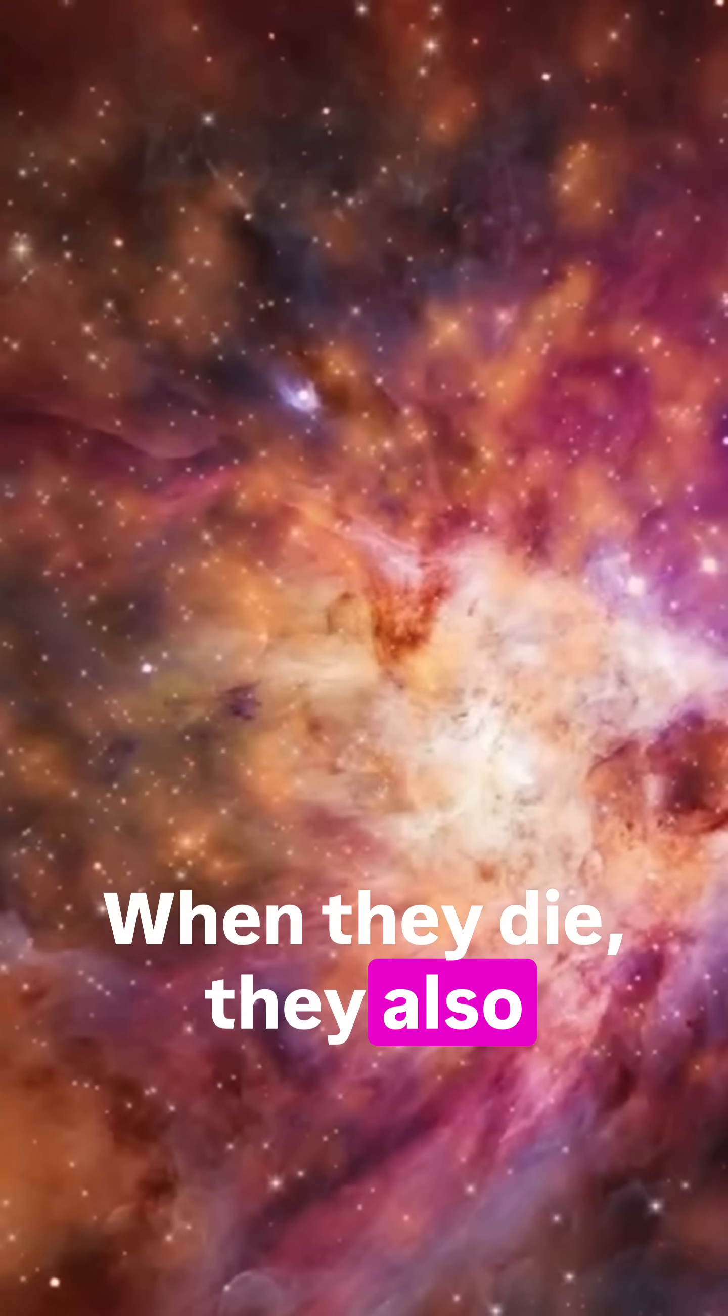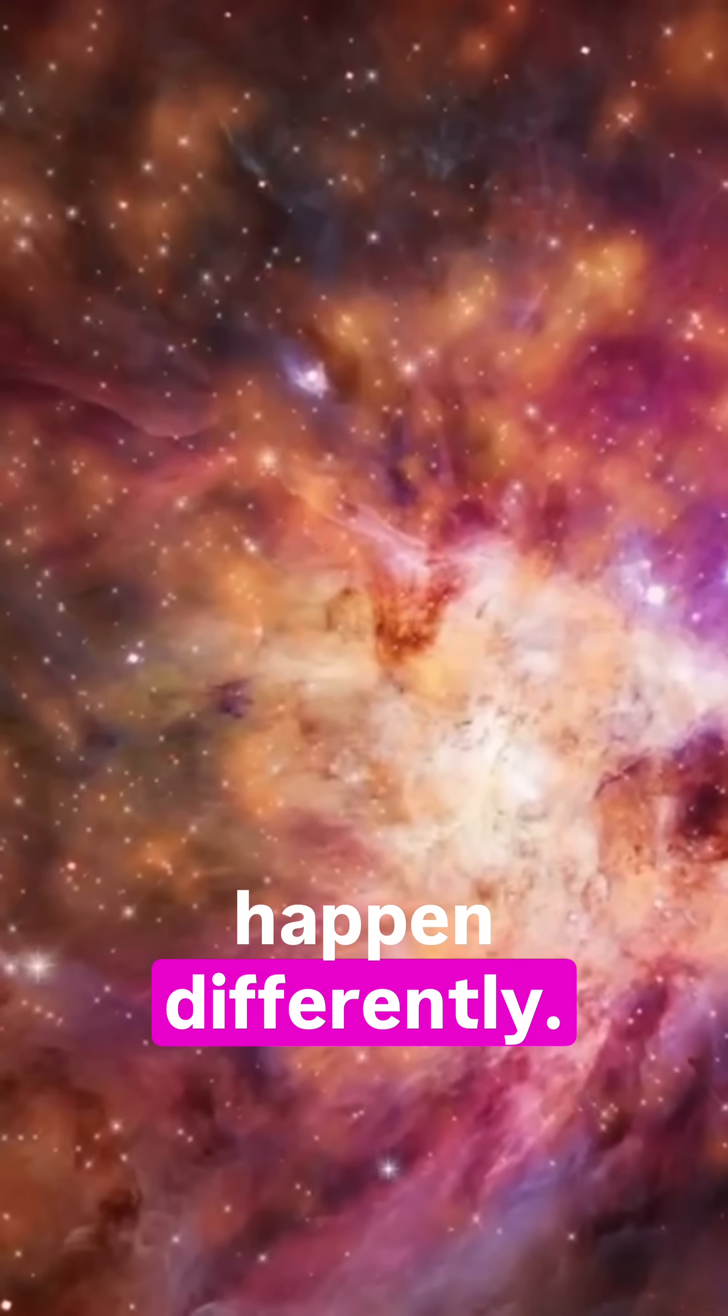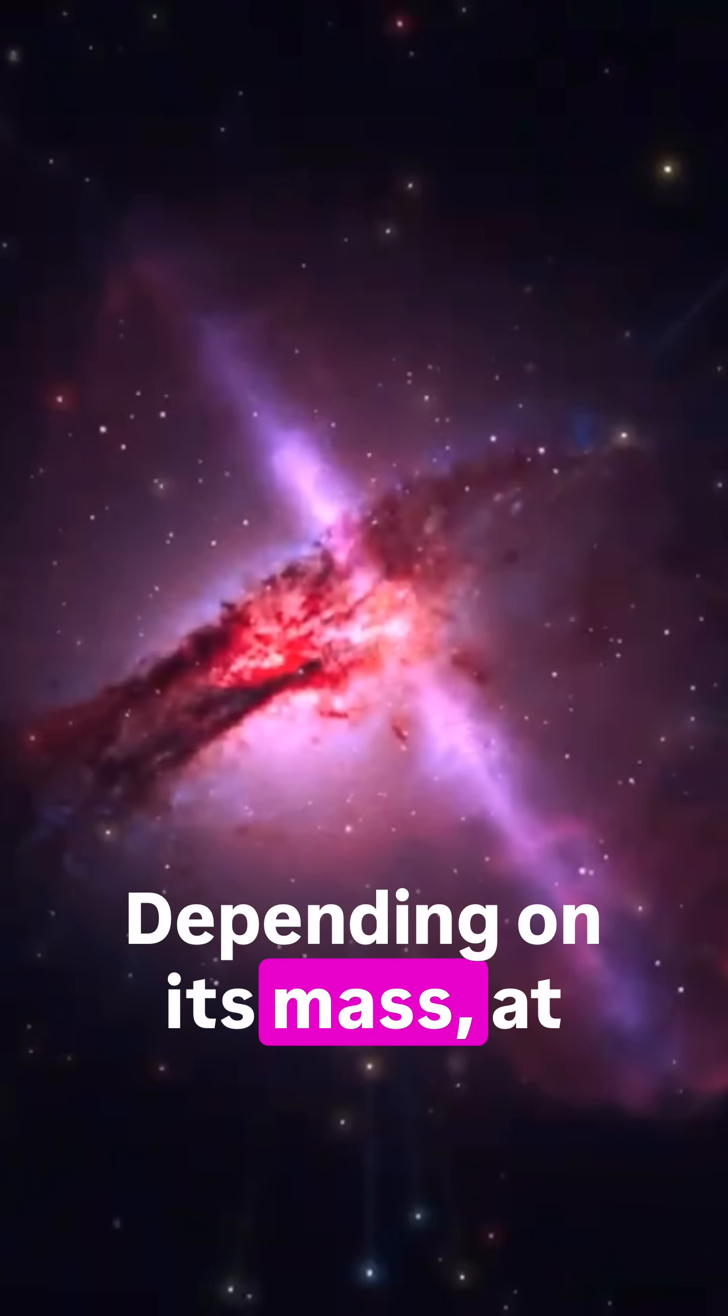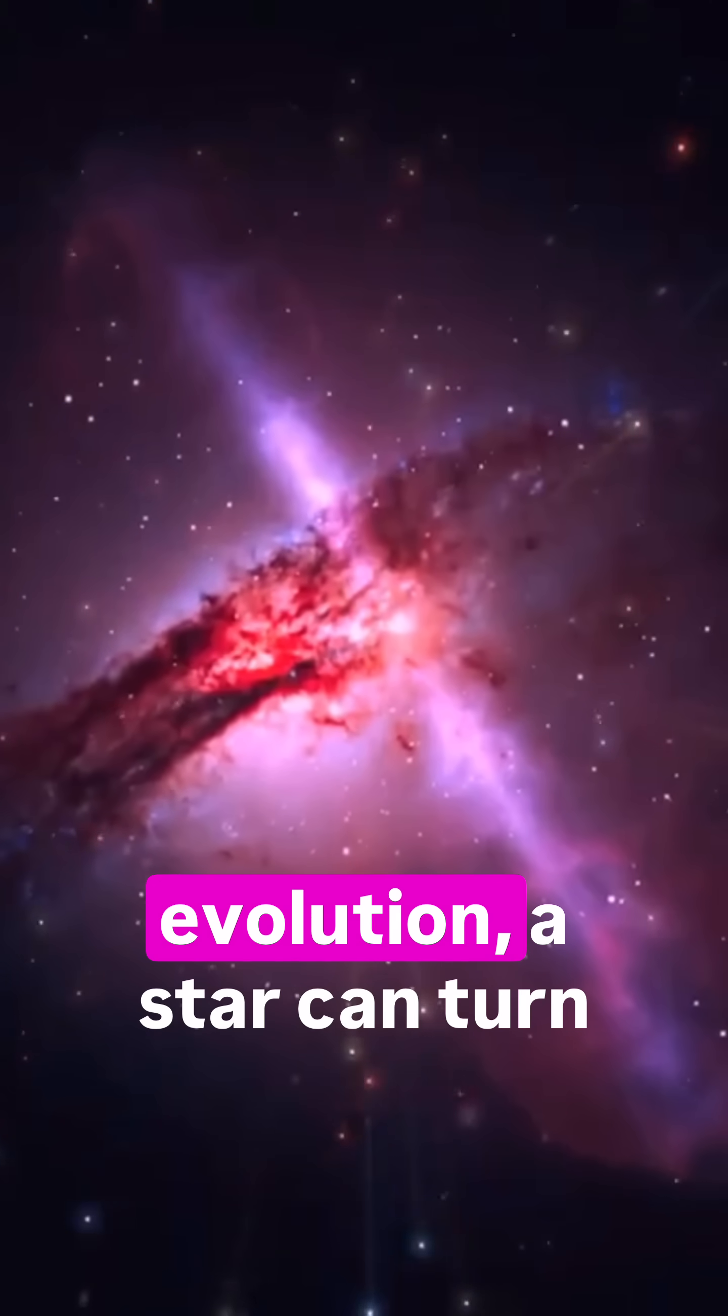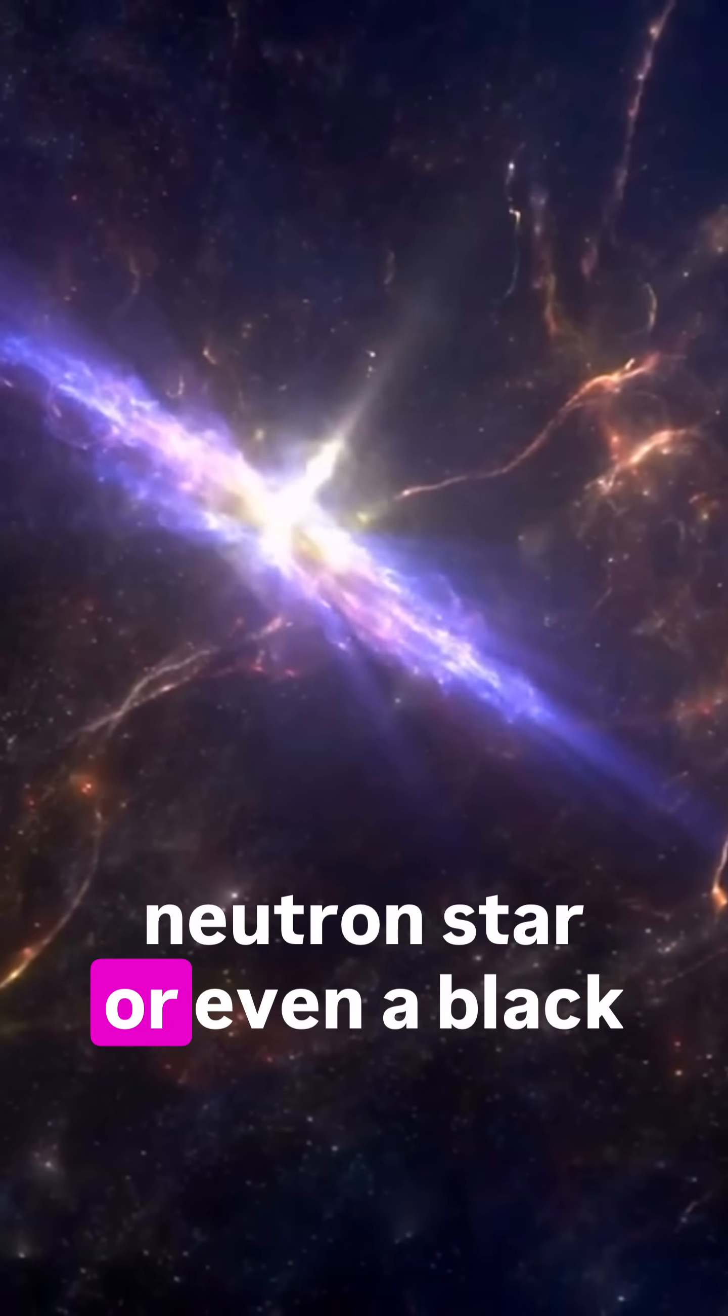When they die, they also leave behind gas and dust. But the very process of death for each star can happen differently. Depending on its mass, at the final stage of its evolution, a star can turn into a white dwarf, a neutron star, or even a black hole.